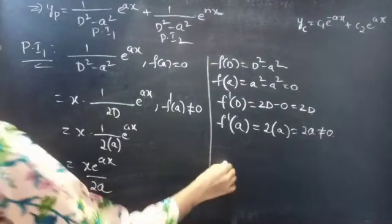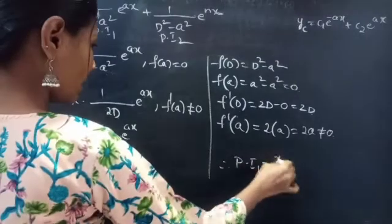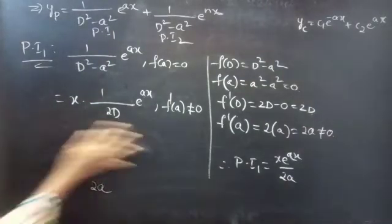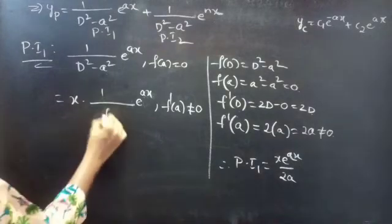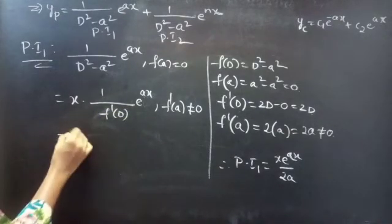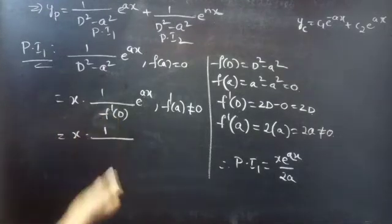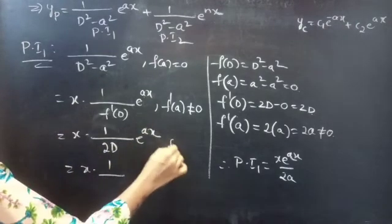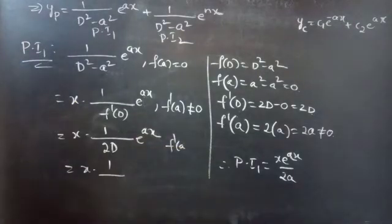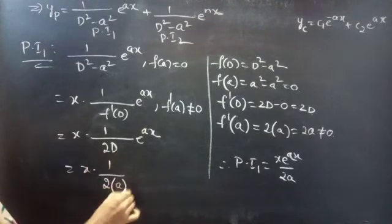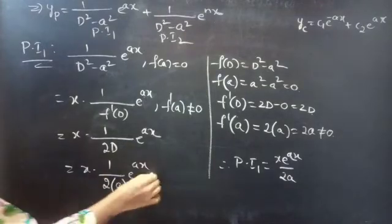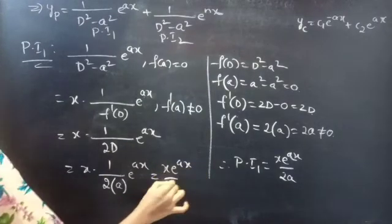Therefore, PI1 = x·e^(ax) / (2a). To show the steps more clearly: PI1 = x · (1/f'(D)) · e^(ax). Since f'(a) = 2a ≠ 0, replace D by a in f'(D). Then you get PI1 = x·e^(ax) / (2a).